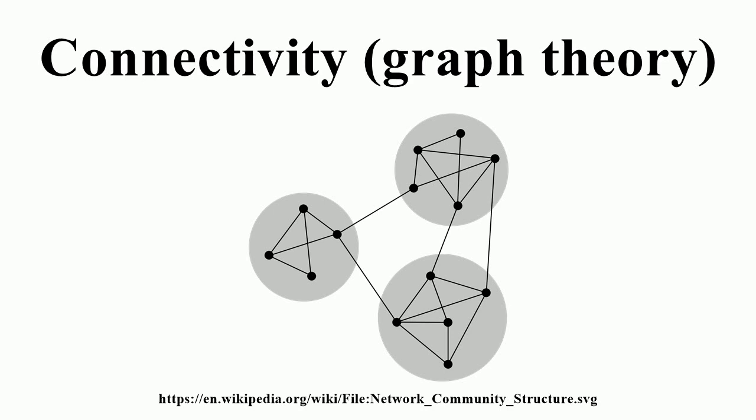Definitions of Components, Cuts and Connectivity. In an undirected graph G, two vertices U and V are called connected if G contains a path from U to V. Otherwise, they are called disconnected. If the two vertices are additionally connected by a path of length 1, i.e., by a single edge, the vertices are called adjacent. A graph is said to be connected if every pair of vertices in the graph is connected.